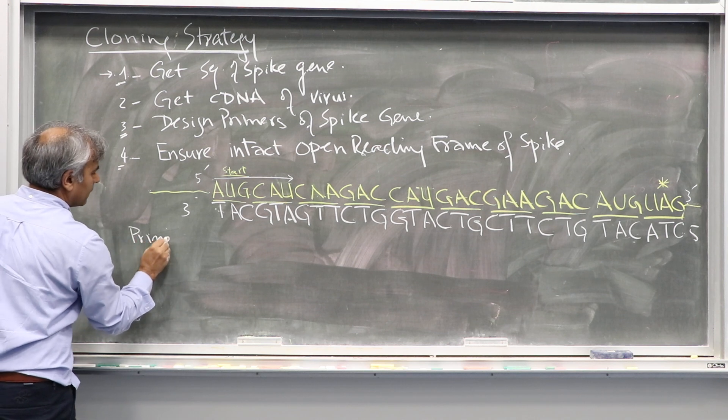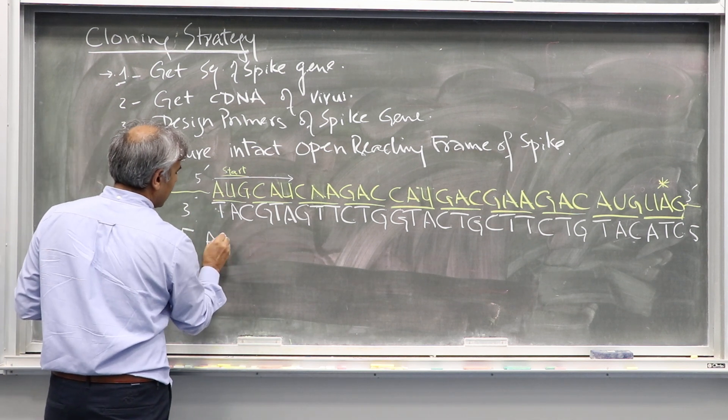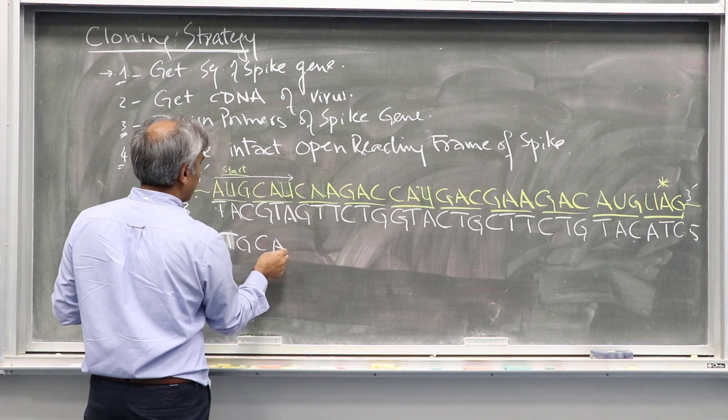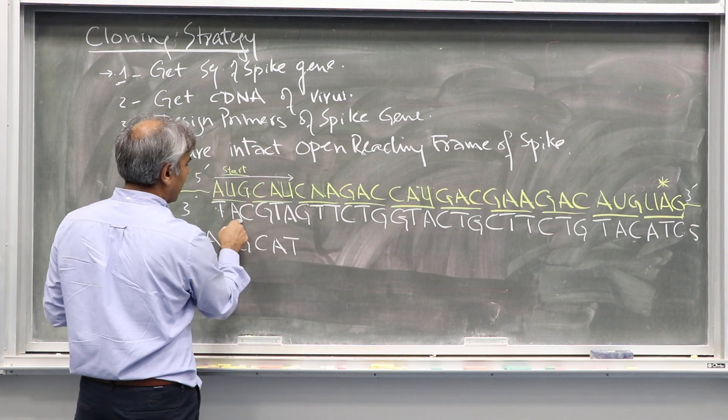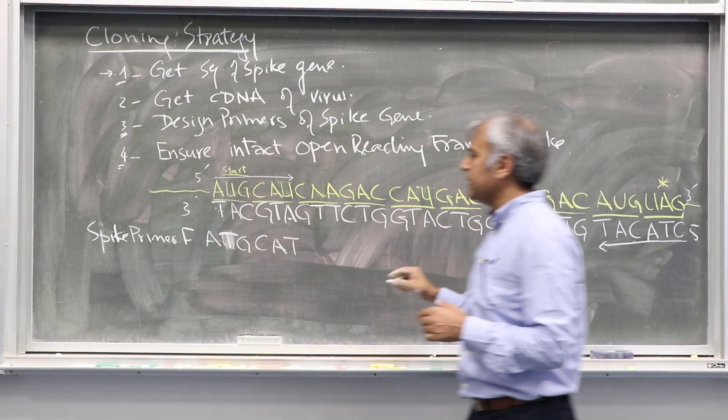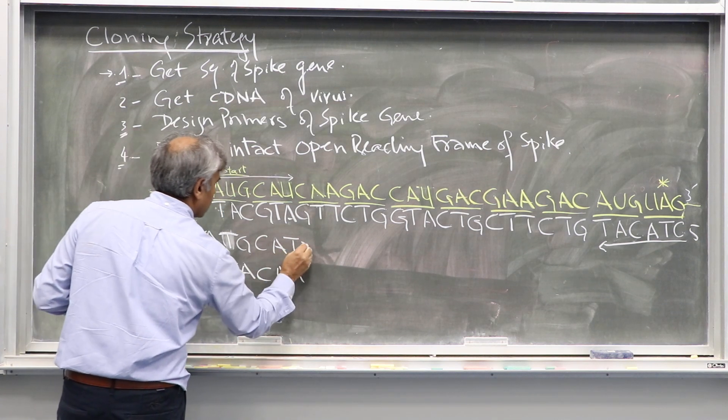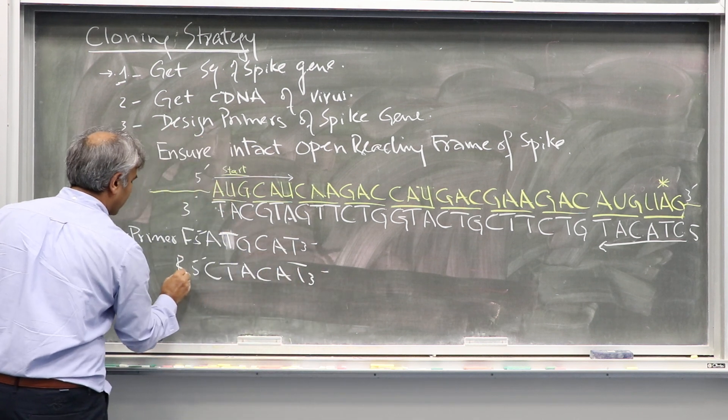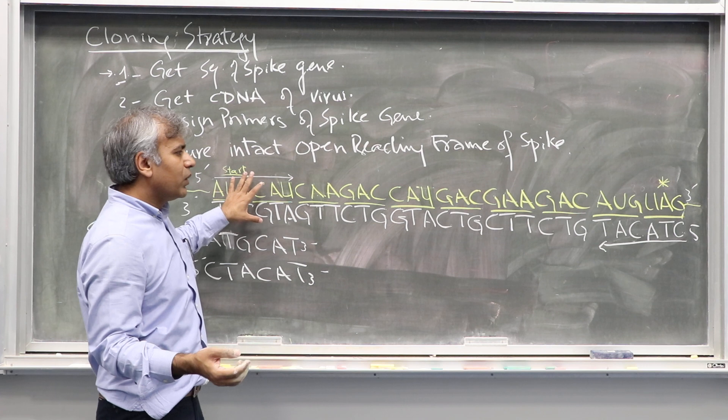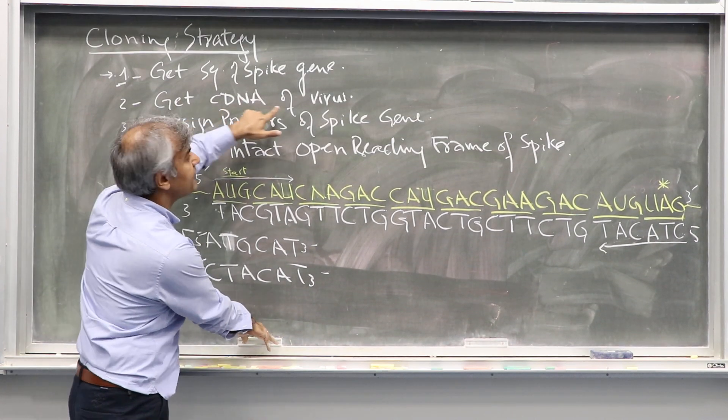Primer forward spike primer forward, for example, is AUGCNAGAC because this is complementary of this. Your second primer will be the reverse primer: CTACAT. This is your reverse primer, spike primer reverse. But before thinking of amplifying this, I told you we have to have the cDNA of virus. When you design these primers and the cloning strategy, you have to ensure that when we clone this spike gene in a bacterial expression vector, the open reading frame remains intact in the triplet codons.